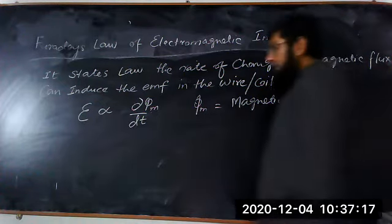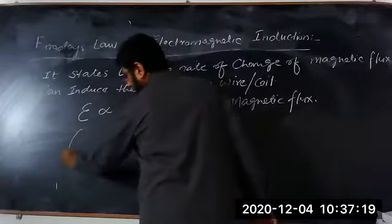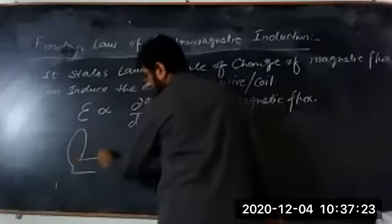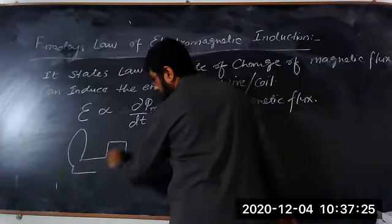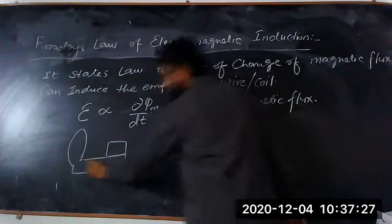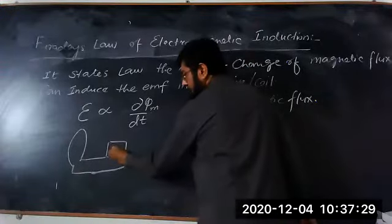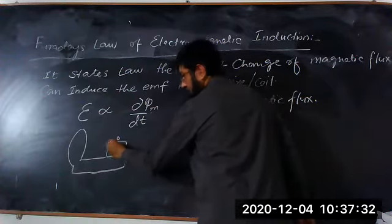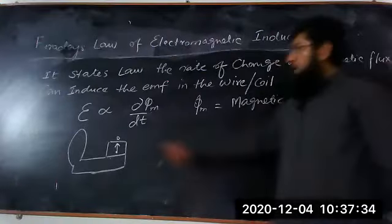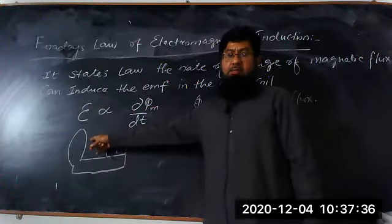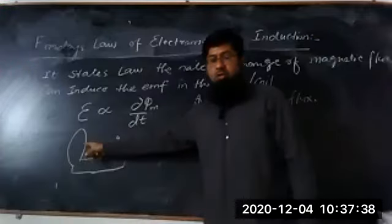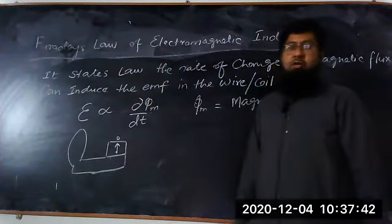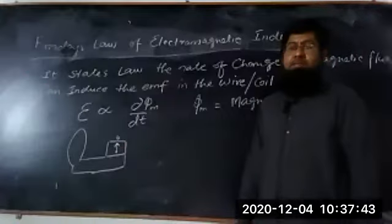For example, if we have a coil like this, and this coil is connected to a voltmeter — this is the voltmeter — the voltmeter shows zero deflection because there is no current in the coil. When there is no current in the coil, it shows zero deflection.